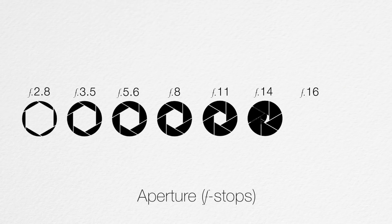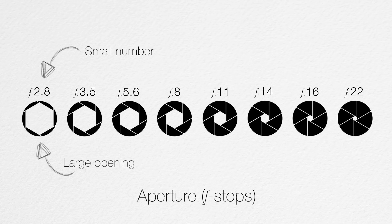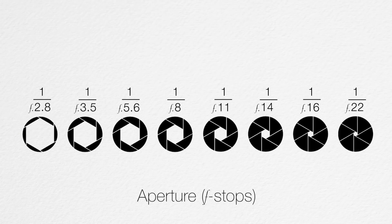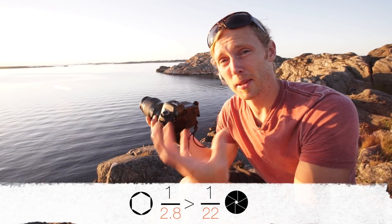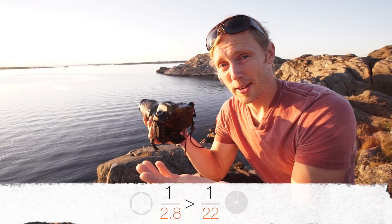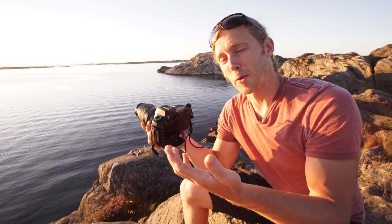What happens — and this might not make sense — is that the smaller the number, the greater the opening is going to be. So the smaller the number, the more light is going to be able to hit the sensor. This is because the number is actually a fraction. It doesn't say so on the camera, but 2.8 actually means 1 over 2.8, and 22 is really 1 over 22, meaning that 1/2.8 is going to be larger than 1/22.